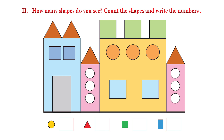Let's count and see how many circles are hidden in this picture. We have one, two, three, four, five, six, seven, eight, nine. You're correct. We have nine circles.